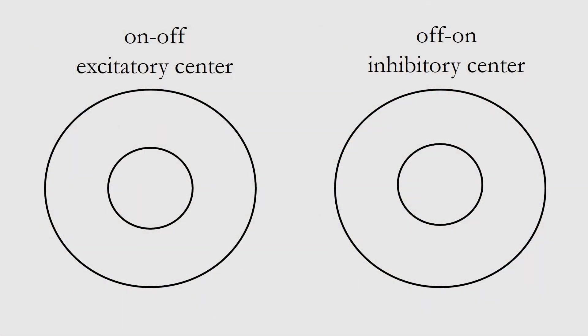Let's take a look at those ganglion cells. As a bit of a review, we have two different kinds of ganglion cells. We have on-off ganglion cells which are sometimes referred to as excitatory center, inhibitory surround cells.